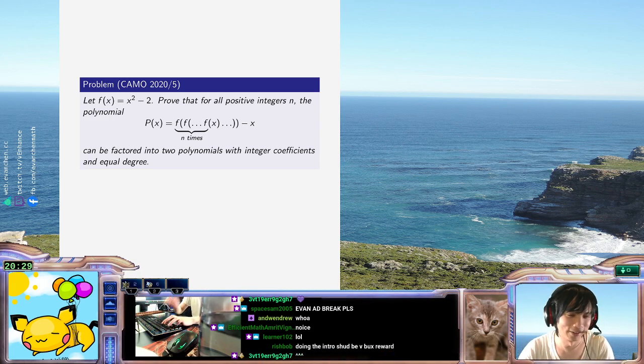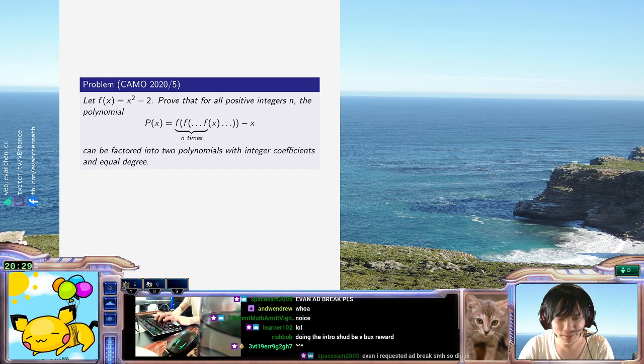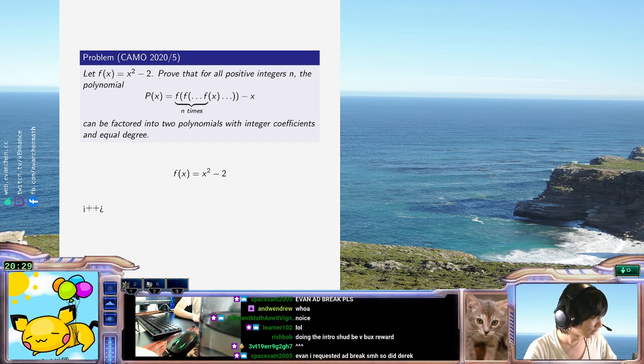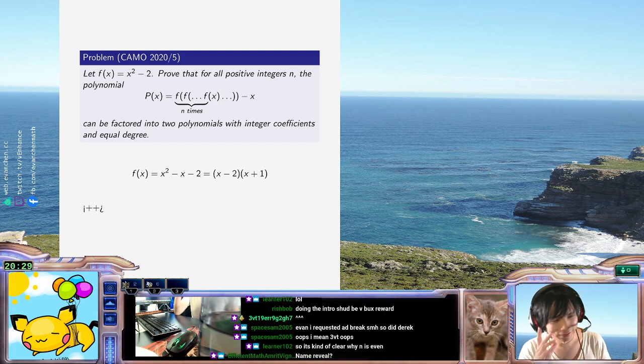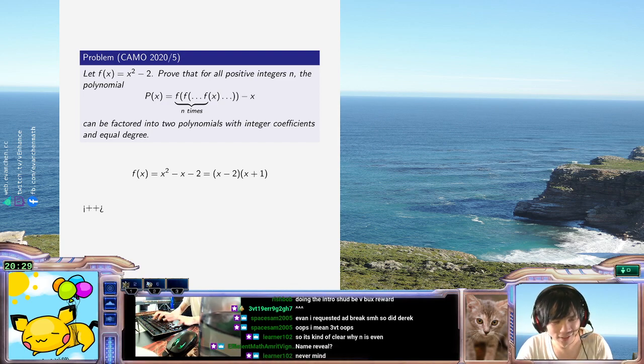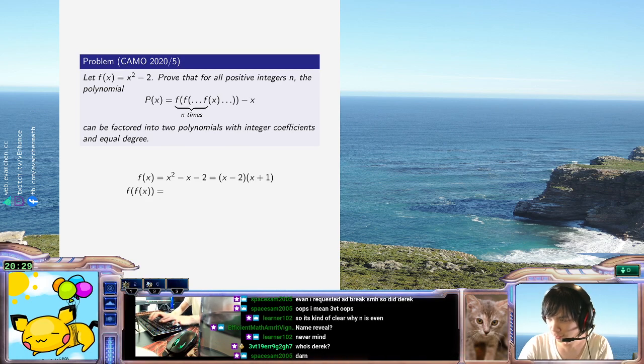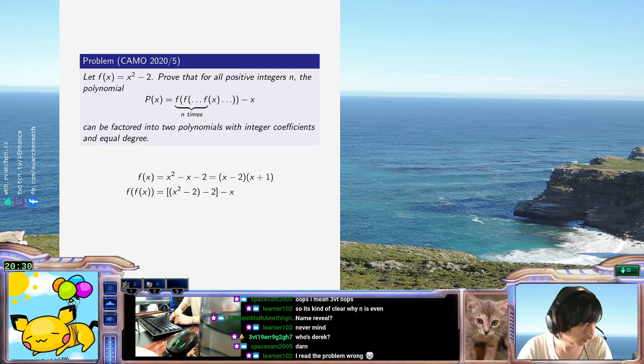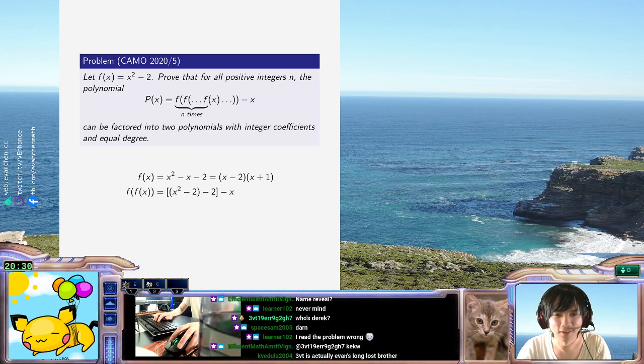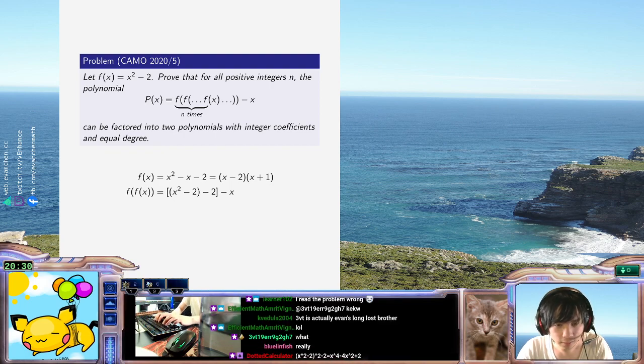Doing the intro should be a V-Bucks reward? That's not a bad idea. So, x squared minus x minus 2 is equal to just x minus 2x plus 1. Oh my god. Are you trying to redeem the- No, I'm about to do the breakdown. We'll do it after the problem. Alright, so... What happens if I iterate it twice? This seems like it requires me to do some calculation.